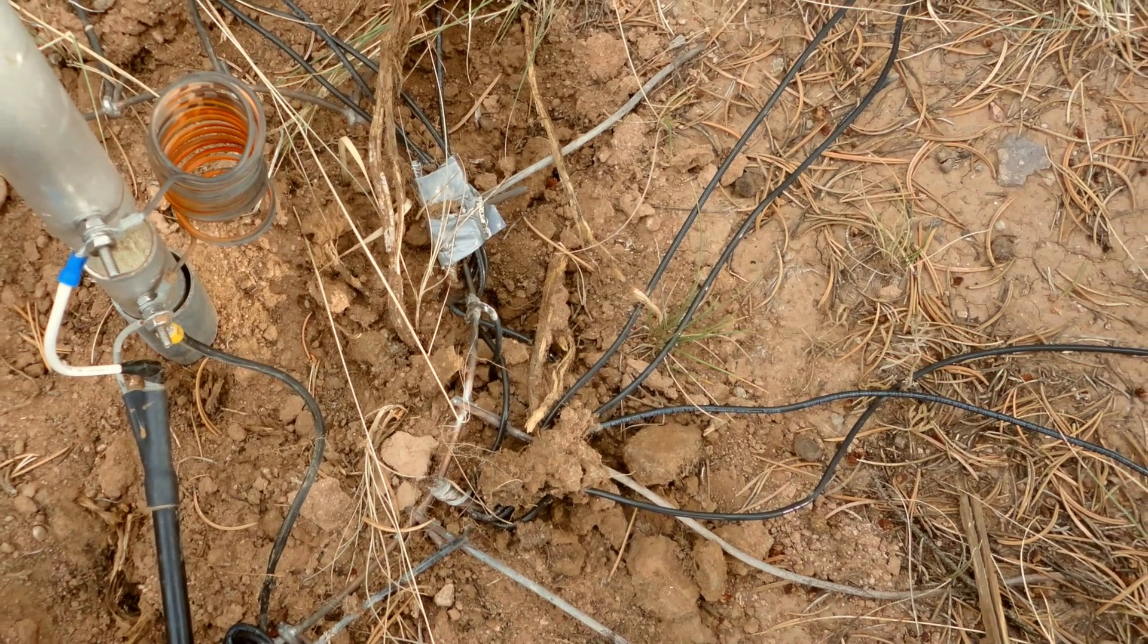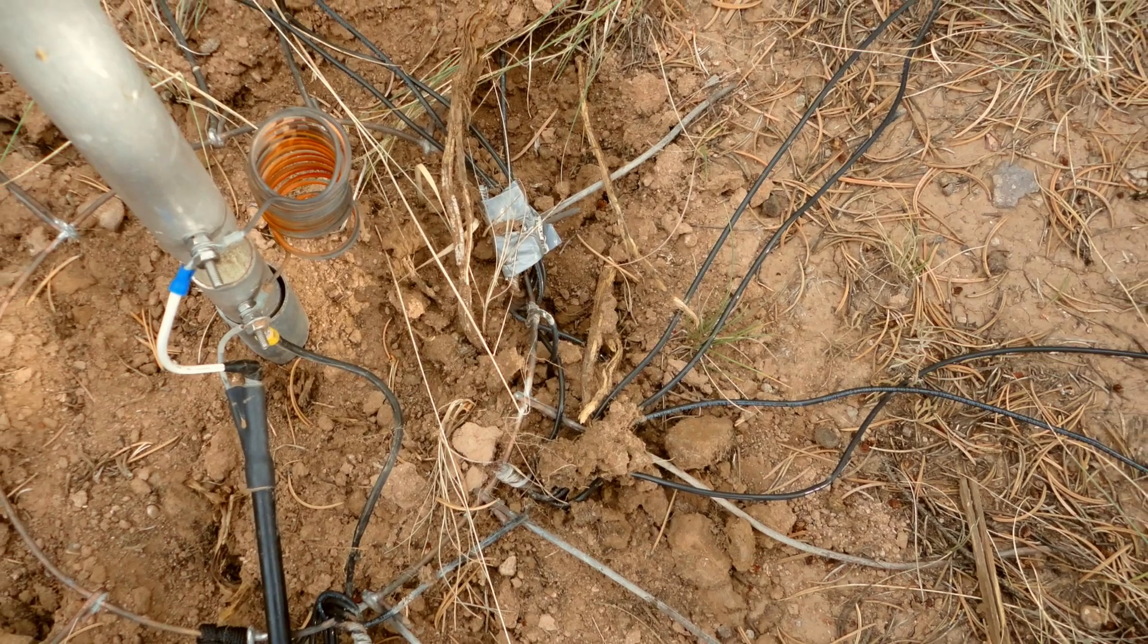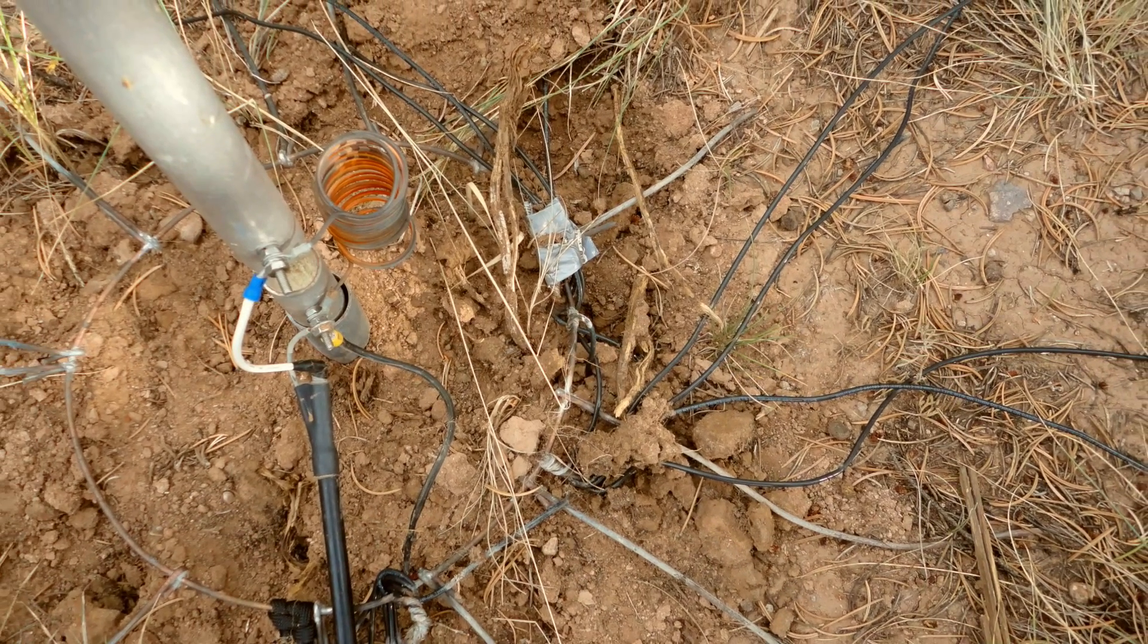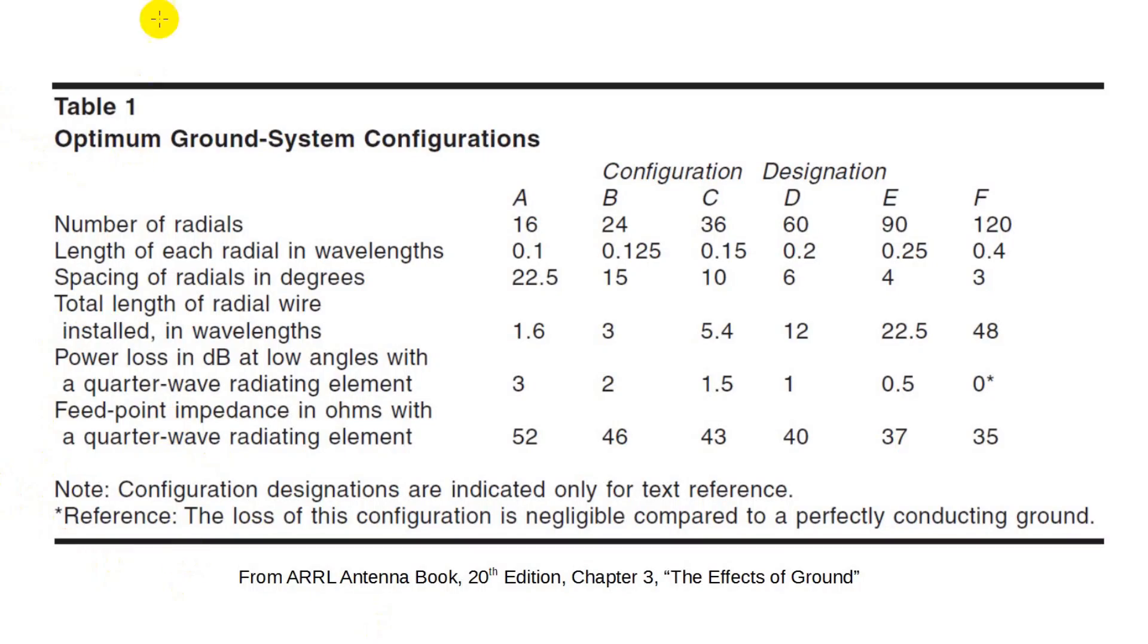Is this an optimal radial system? By no means. Does it work? Yes. Now let's look at a table from chapter 3 of the 20th edition of the ARRL antenna book. This shows the effect of radial systems from something relatively rudimentary with 16 short radials to a so-called perfect radial system with 120 radials.